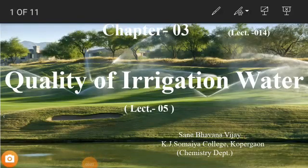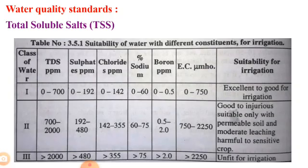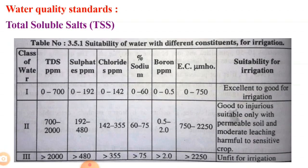Hello students, this is chapter number three: Quality of Irrigation Water, lecture number five. Today's topic is water quality standards. After analyzing a water sample for different parameters like total salts and cations, it is essential to calculate some indices in order to assess water quality and its subsequent effect on soil.